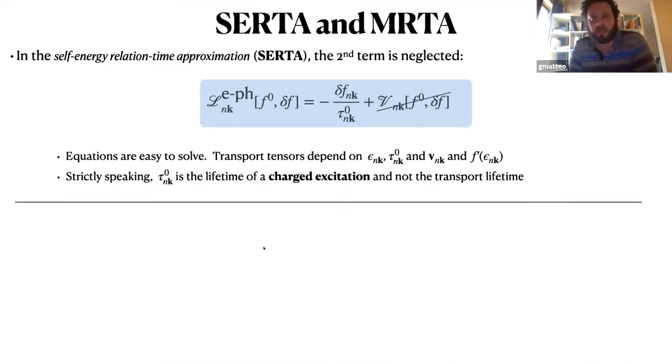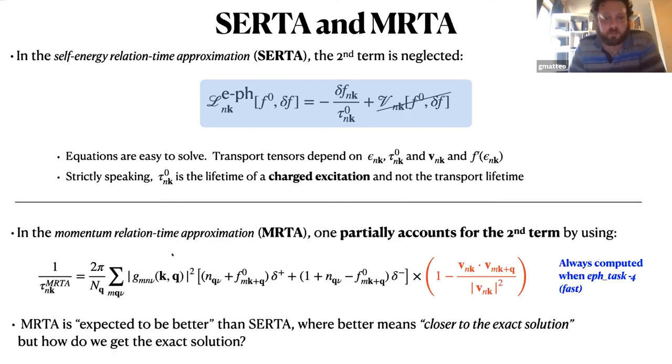For the time being, I'm really interested in understanding how to simplify even further these equations, and so I introduce two approximations that are commonly used in the literature. In the so-called SERTA approximation, one completely neglects the second term, and we end up with this simple expression. The nice thing is that the equations are easy to solve. You can get an explicit expression for the linear correction, and also transport tensors are very easy to compute in terms of these ingredients. But strictly speaking, tau zero represents the lifetime of the charge excitation. It cannot be directly related to a transport lifetime unless we assume the SERTA approximation.